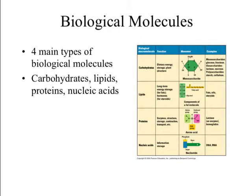We've taken a look at the building blocks of macromolecules — hydrocarbons, different functional groups that can be added, and how we get big long chains of macromolecules. Now we're going to focus on the four main types of biological macromolecules: carbohydrates, lipids, proteins, and nucleic acids.